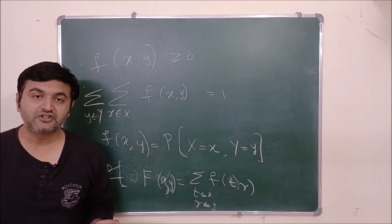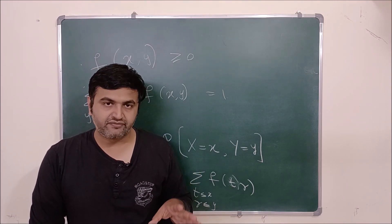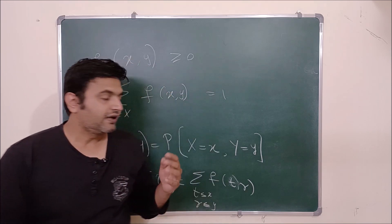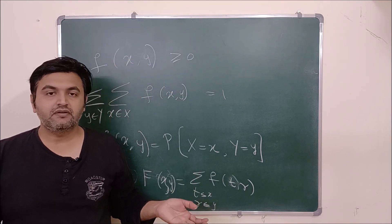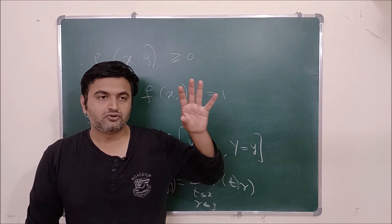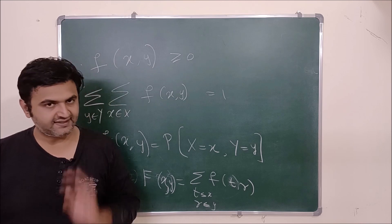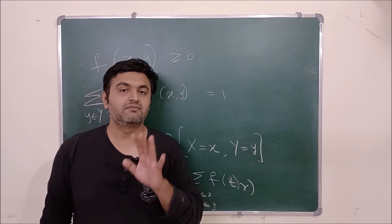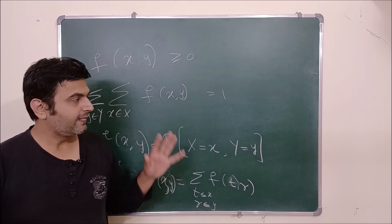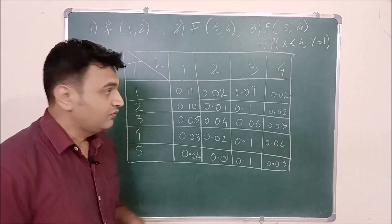What is marginal distribution? If you have a joint PMF for random variables X and Y, can you get the probability for X equal to something only — that is, a PMF for just one random variable from the joint PMF? The answer is yes, and that is the marginal distribution. Let me take an example and explain it alongside.